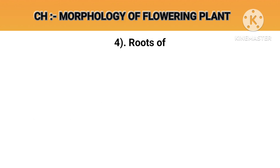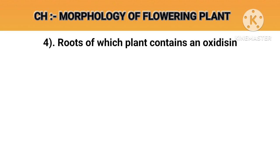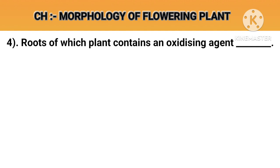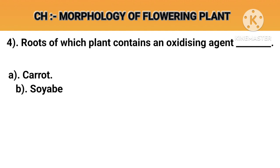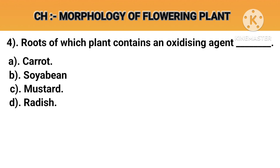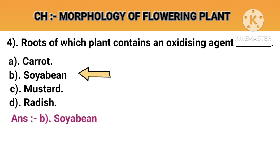Question number 4. Roots of which plant contains an oxidizing agent. Option A: Carrot. Option B: Soybean. Option C: Mustard. Option D: Radish. Answer B: Soybean.